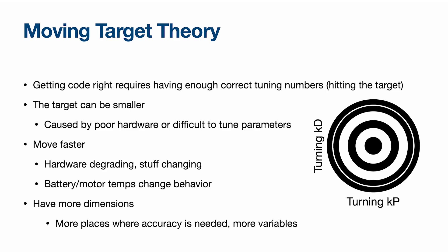Next, moving target theory. This theory is based on the idea that getting code right requires having enough correct tuning numbers — positions, distances you need to move, PID values, any of that. All of these numbers need to be exactly correct to have the robot do exactly what you want, because these things are finicky. You have to think about what you can do to either make it easier to tune, have to tune it less, make the targets wider, or have the parameters not exist. More dimensions means more variables are needed. Moving faster introduces issues where battery or motor temperatures change behavior or hardware degrades — especially seen in dome matches where teams are very unreliable with their autonomous routines.